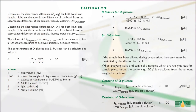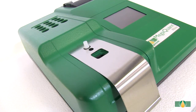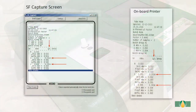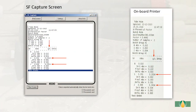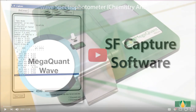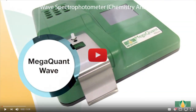The absorbance readings A1 and A2 of the sample and the blank reactions are used to calculate the D-Glucose concentrations in the original samples. When performing this test using the pre-installed protocol on the MegaQuant Wave spectrophotometer, the results will be automatically calculated and printed via the on-board printer, or the data can be exported to a computer using the SF Capture software. Please see your MegaQuant Wave video for further details.